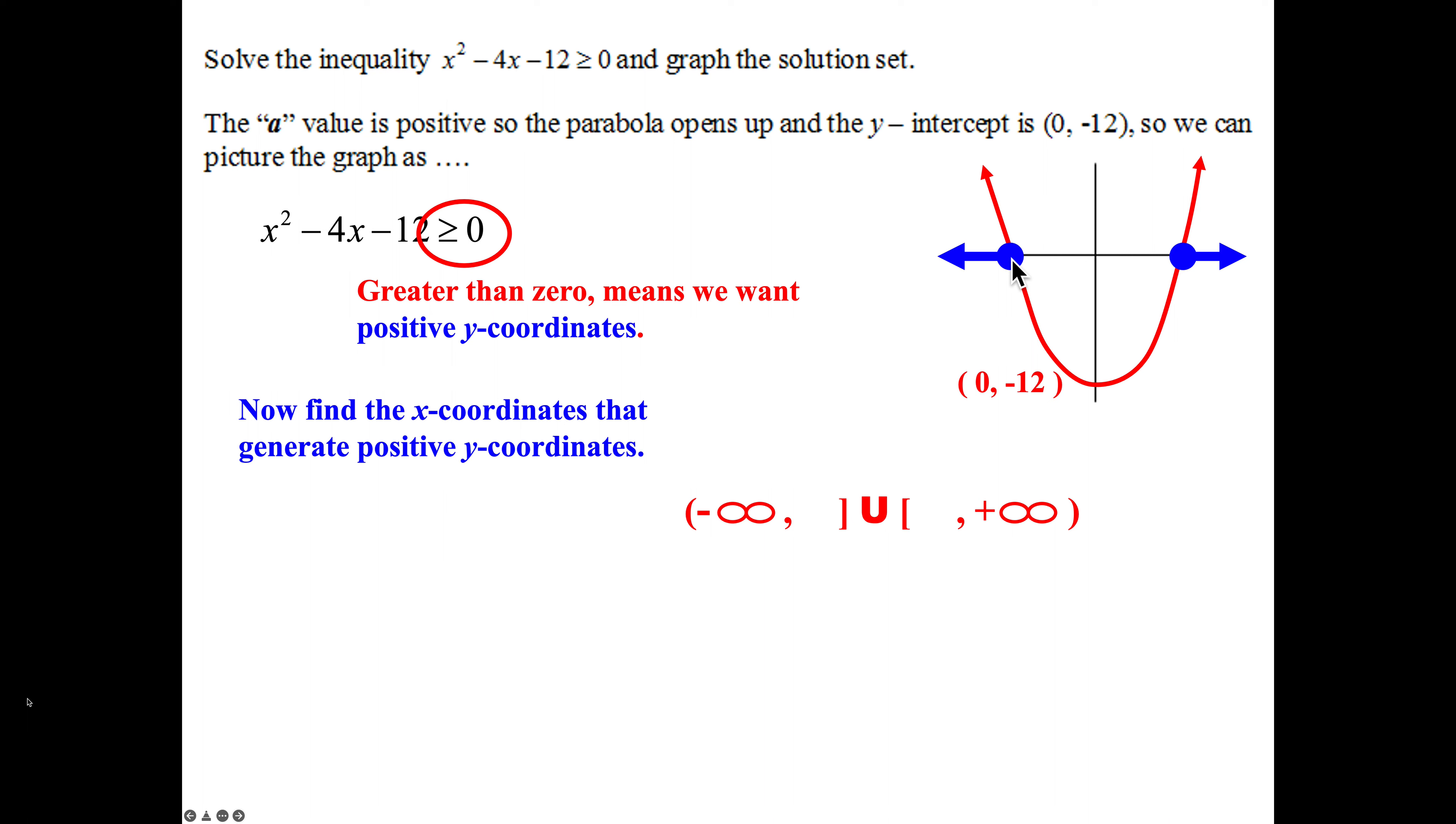So now that I know what my answer looks like, what I really need to find are these x-intercepts. If I'm looking for x-intercepts, it's no longer an inequality. It's an equation. You just set it equal to zero, you factor, and you solve. So what two factors of 12 will subtract to be negative 4? That's negative 6 and 2. So x minus 6, x plus 2, set them equal to zero, solve for x, x equals 6, x equals negative 2. So the smallest x-intercept, the one that's negative, that's negative 2. The smallest number goes to the left, and the largest goes to the right. So we plug in our numbers, and we have our solution set.